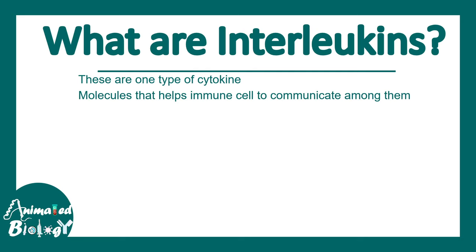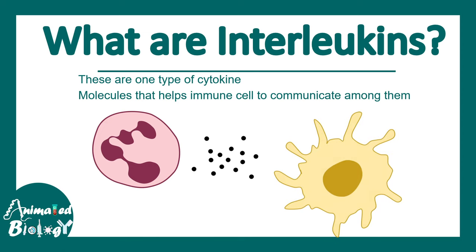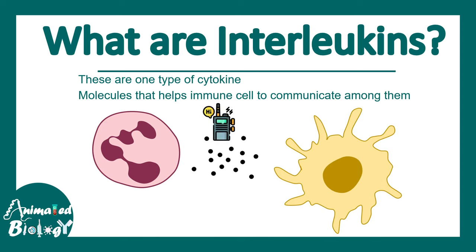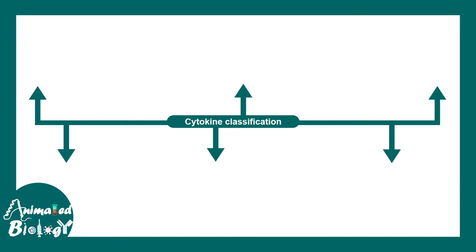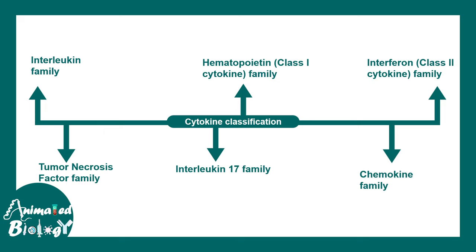Cytokines are molecules that help the immune system communicate among itself. For example, a neutrophil can communicate with a macrophage via cytokines — it's like a molecular walkie-talkie. Cytokine is a broad umbrella term covering many families: interleukins, hematopoietin family, interferon family, tumor necrosis factor family, interleukin-17 family, and chemokine family.